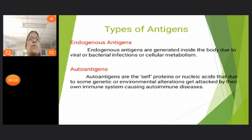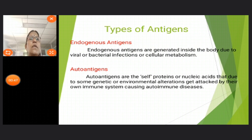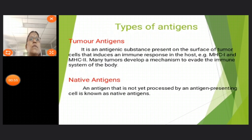Exogenous antigens are the most common type of antigens. Endogenous antigens are generated inside the body due to viral or bacterial infections or cellular metabolism. Autoantigens are self proteins or nucleic acids that, due to some genetic or environmental alterations, can get attacked by their own immune system, causing autoimmune diseases.